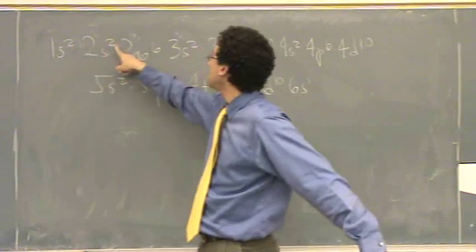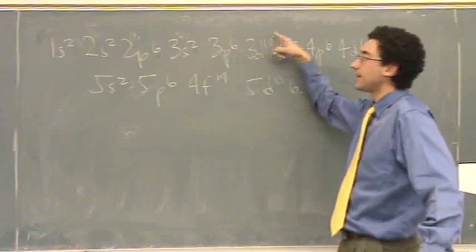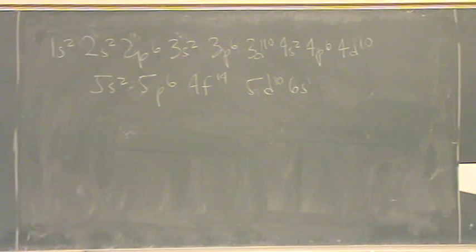The brainless way is to go 2 plus 2 plus 6 is 10, another 2 is 12, whatever, all the way on up, and then you find that number on the periodic table.